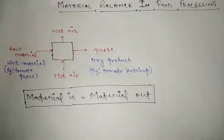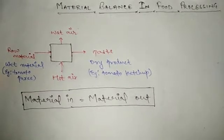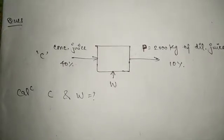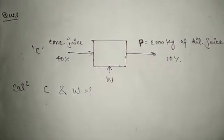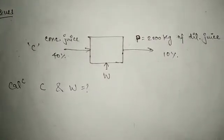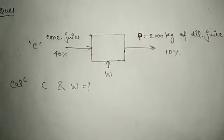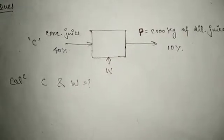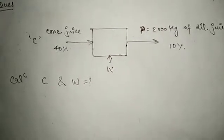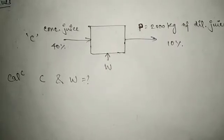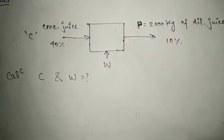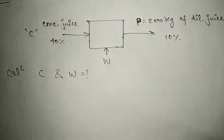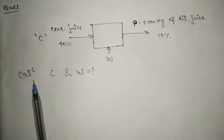Now let's discuss a question. A concentrated juice with 40 percent concentration is put into an evaporator. The diluted juice that we get is 2,000 kilograms and its concentration is 10 percent. The juice that entered the evaporator is 40 percent concentrated. We add some water to make the juice diluted. We have to find the amount of juice that enters the evaporator and the amount of water added.